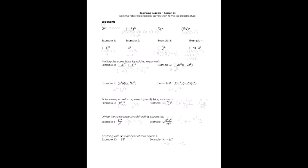What is an exponent? The base number — in this first example, 2 is our base — is multiplied the number of times the exponent indicates, which is 3. So an exponent tells us to multiply 2 three times: 2 times 2 times 2 would be another way of writing it.